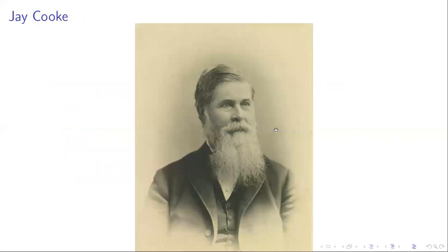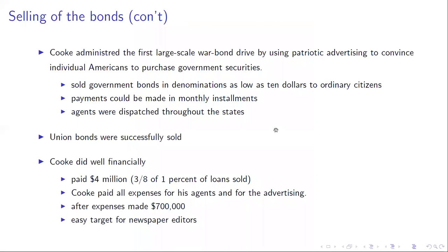Jay Cook first tries to sell the bonds to the banks with mixed success. But he quickly realizes he cannot sell all the bonds simply to the banks, so he starts to administer the first large-scale war bond drives, using patriotic advertising to convince individual Americans to purchase government securities. He starts selling government bonds in low denominations — you only need $10 to buy a government bond — marketing them to ordinary citizens.